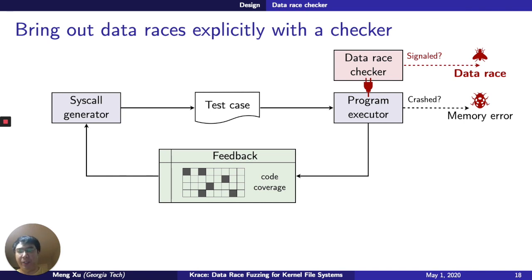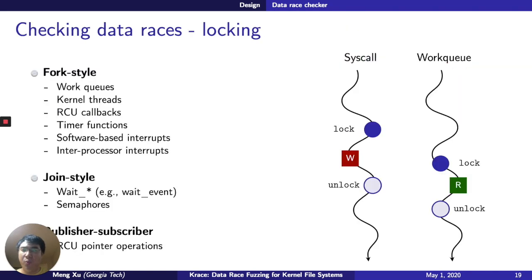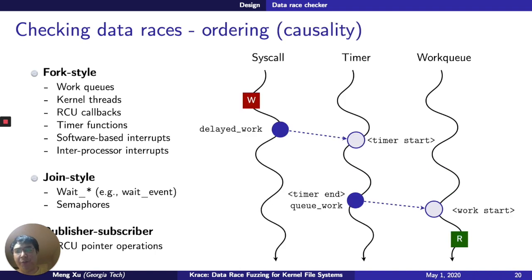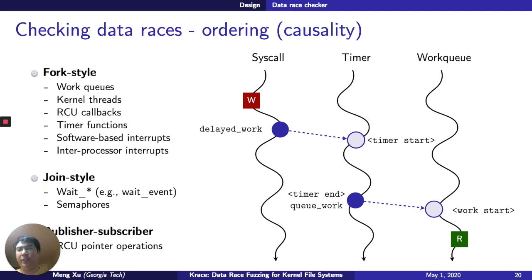Specifically, we check whether there are two memory accesses from different threads, and if we have locks guarding between the read and write, we say this is not a data race. On the other hand, if we can establish a causality relation — for example, something forks another thread — we also don't consider that a data race. But other than that, anything writing or reading to the same memory location is going to be a race.